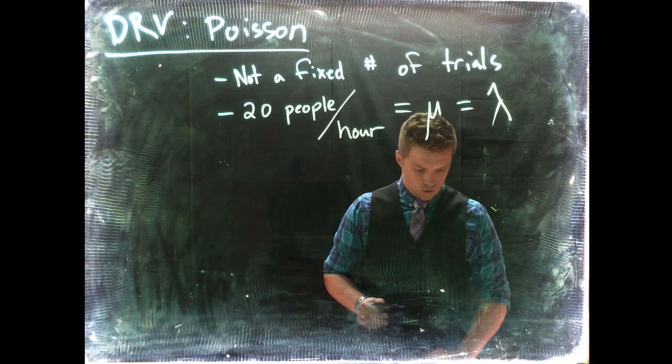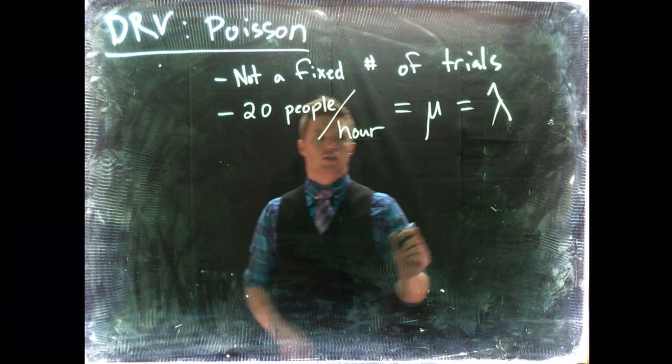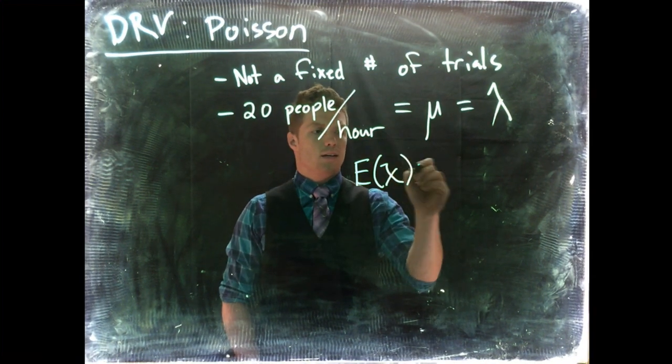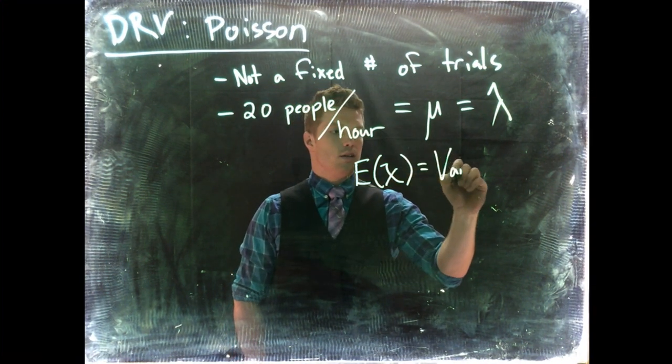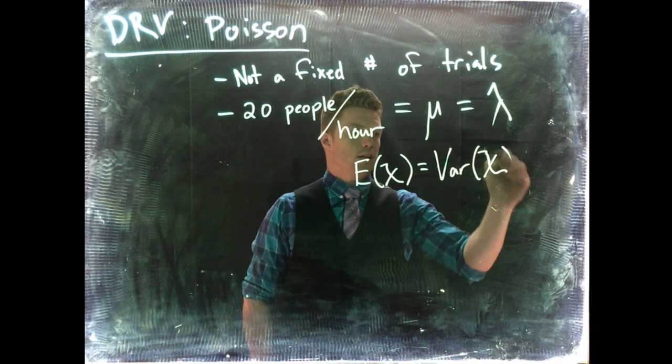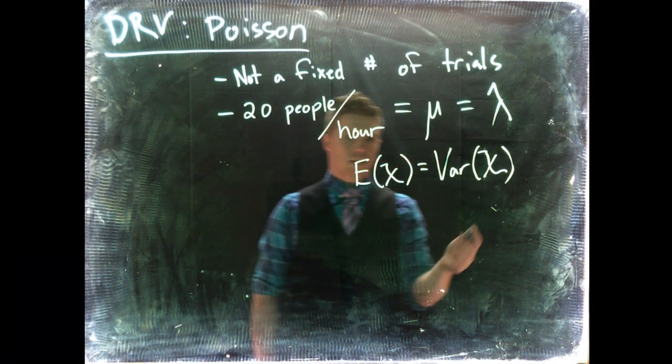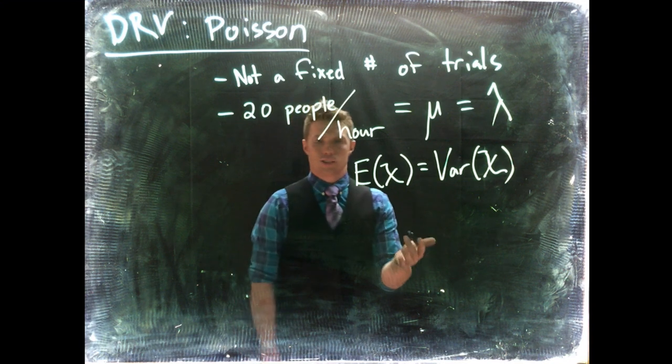One interesting thing about the Poisson distribution is that the expected value of X actually equals the variance of X. So if you know what mu is, you know what sigma is. It's pretty straightforward.